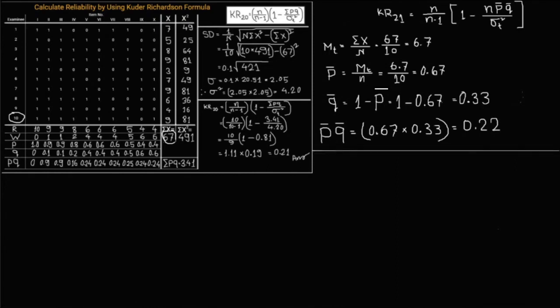Now let's calculate the reliability of the test using KR21. Small n means number of items. Number of items is 10. So 10 by 10 minus 1, in brackets 1 minus 10 into pq 0.22 by variance of total score which is 4.20.